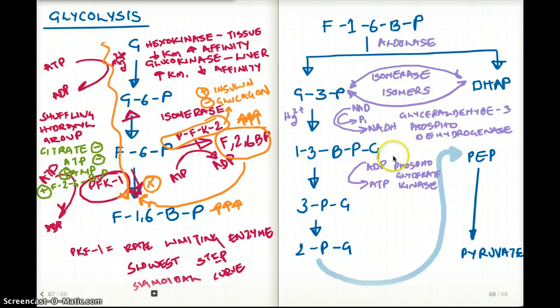Now 1,3-BPG in red blood cells can be converted to 2,3-BPG, and you know that 2,3-BPG has greater affinity for hemoglobin when it is in deoxygenated state than in oxygenated state. So there is also that step going on right here.